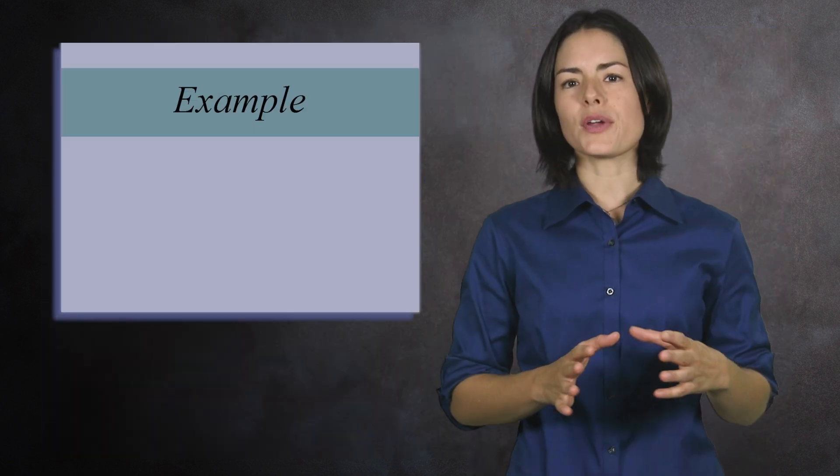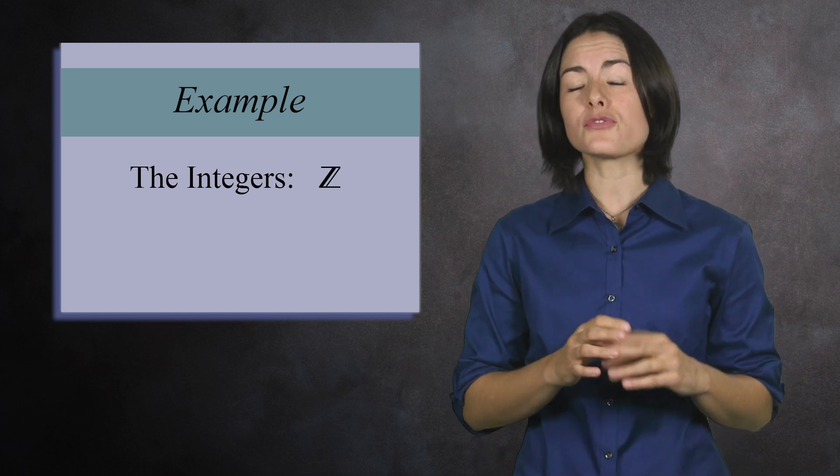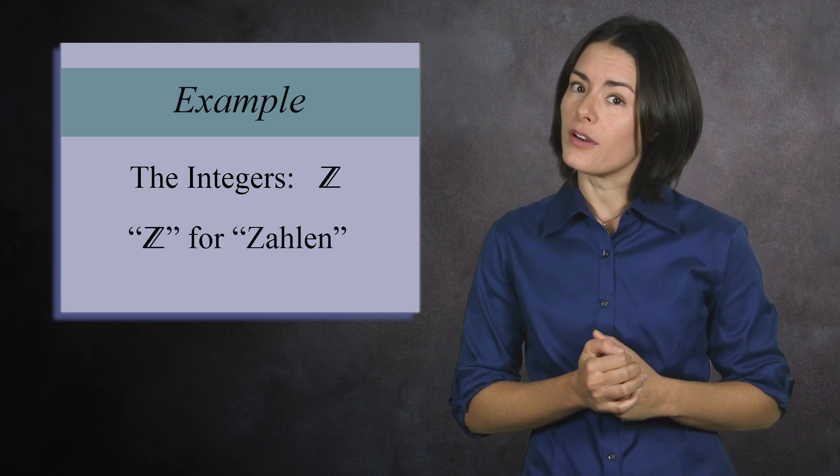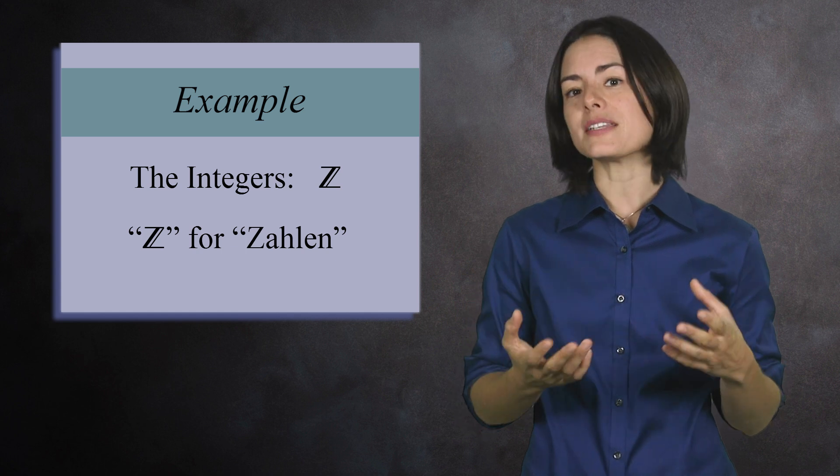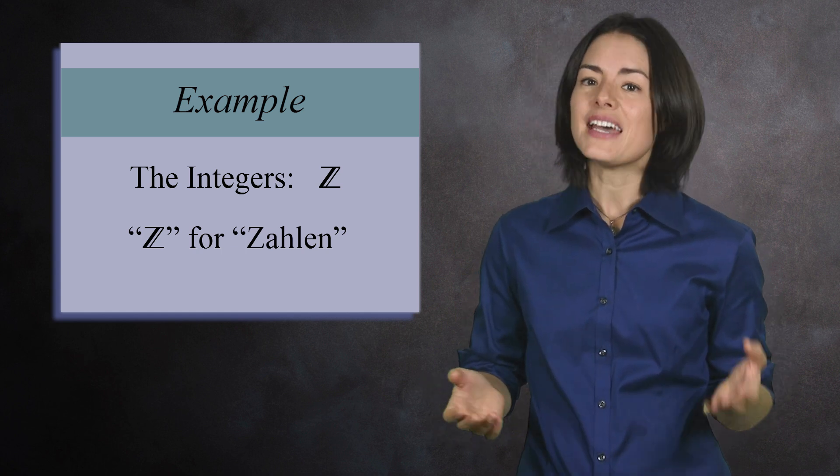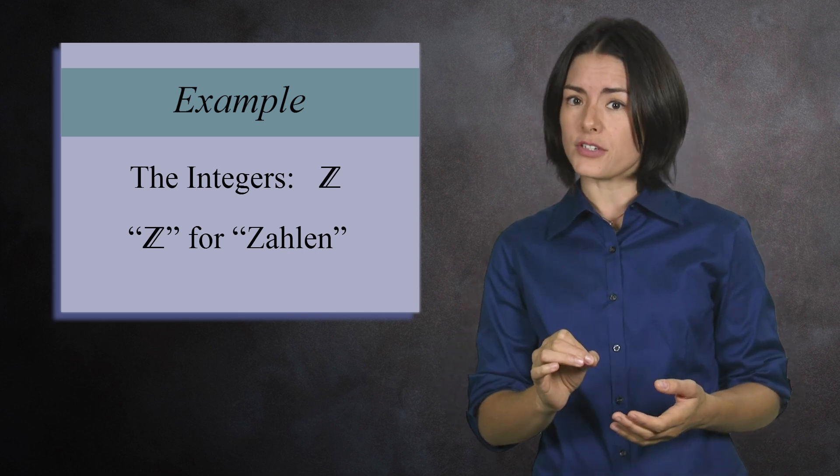A classic example of a ring are the integers. The set of integers is denoted with a double stroke z. This is from the German word zalen, meaning number. Historically, number meant integer. That's why number theory is a study of the integers. Nowadays, however, number has a more general meaning. But we stick with the letter z for the integers.